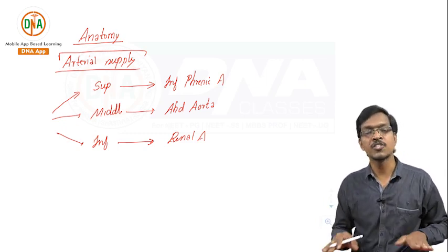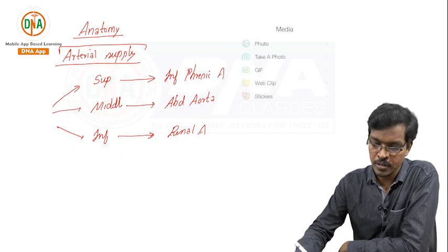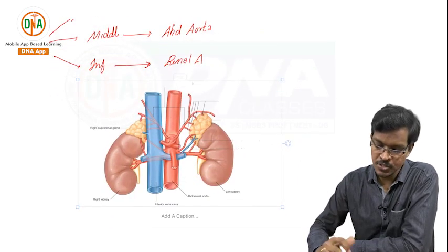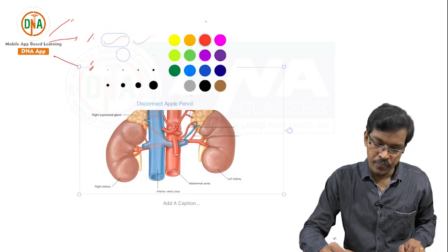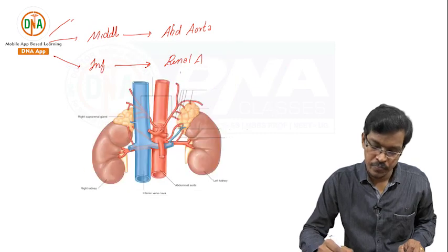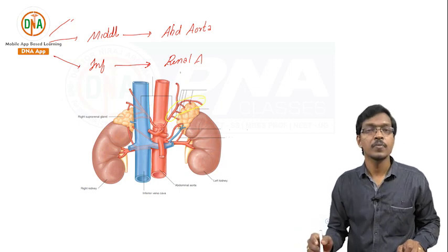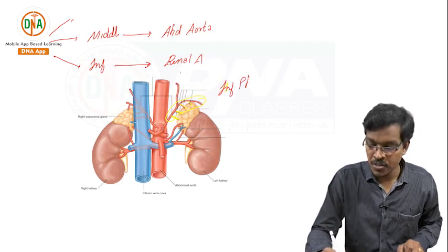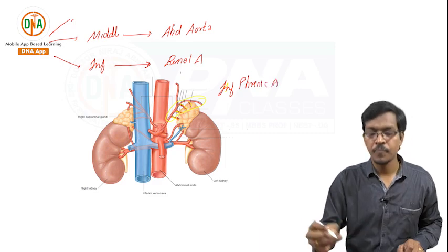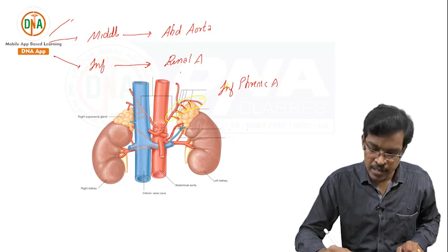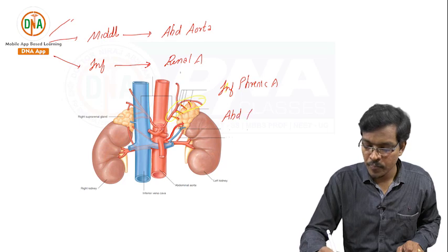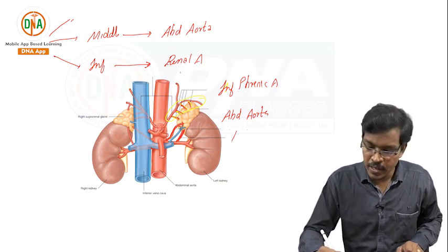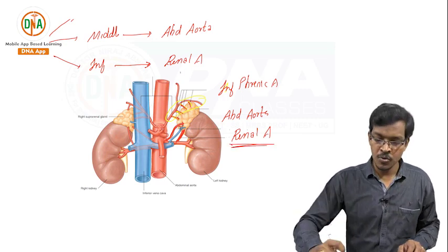This topic is important because each branch can be asked in an MCQ. Looking at the diagram showing the suprarenal arteries: the superior suprarenal artery arises from the inferior phrenic artery; the middle suprarenal artery arises directly from the abdominal aorta; and the inferior suprarenal artery arises from the renal artery. That is the arterial supply.